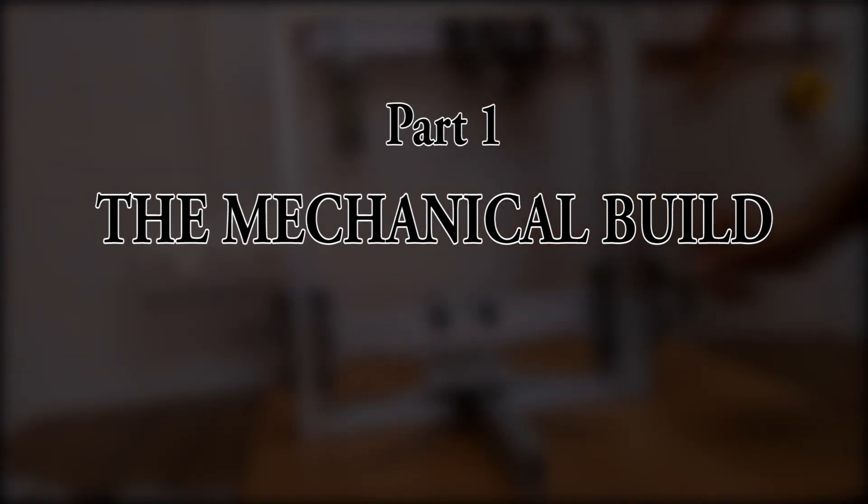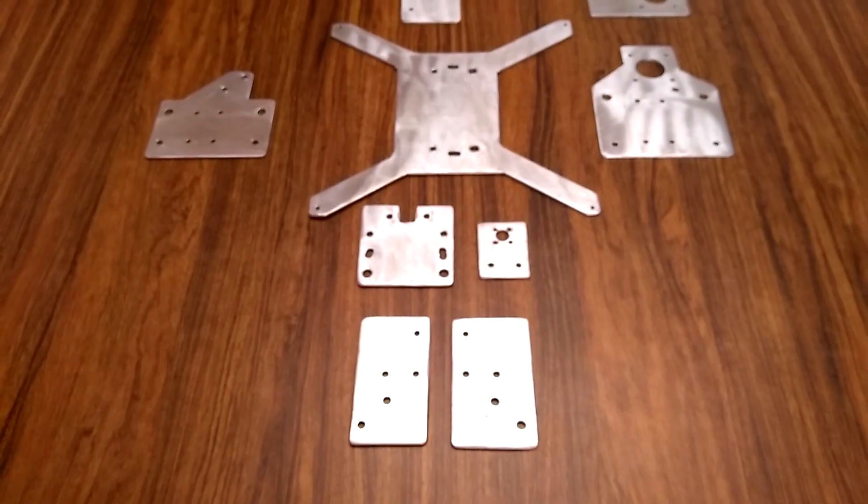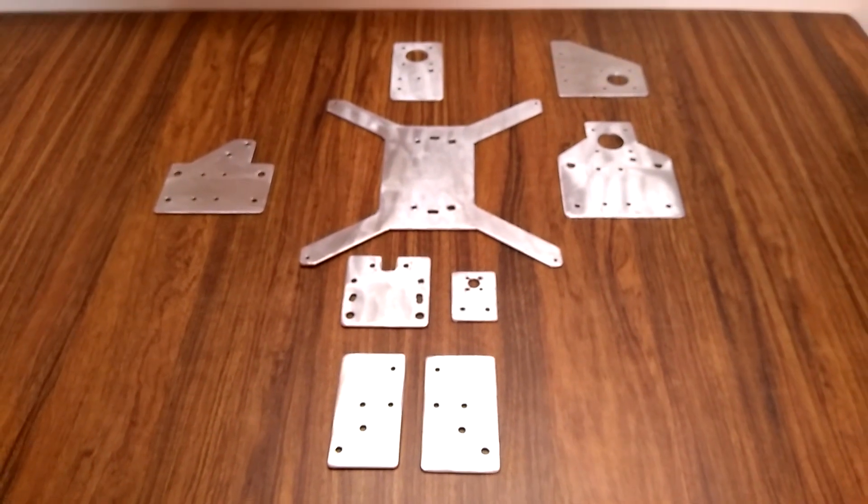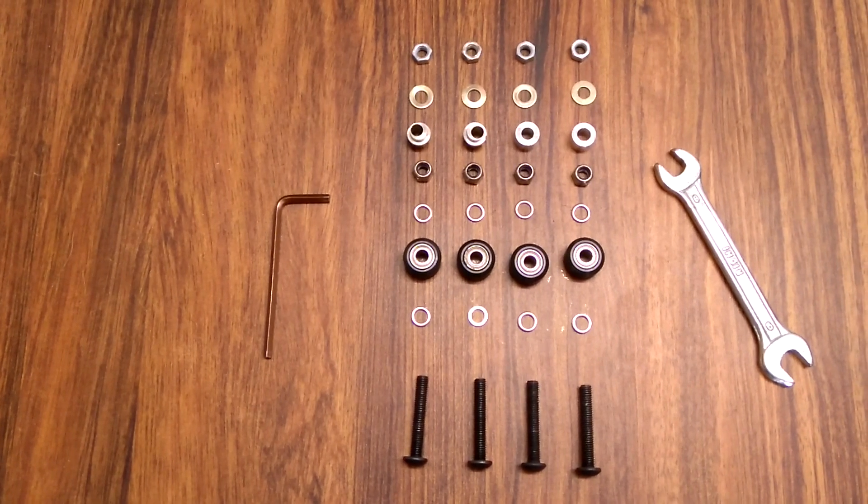The first part covers the mechanical build of the printer. I have used 20x20 and 20x40 aluminum extrusions and aluminum gantry plates. I have used derlin V wheels for motion in the X, Y and Z axis.